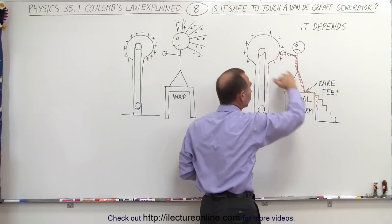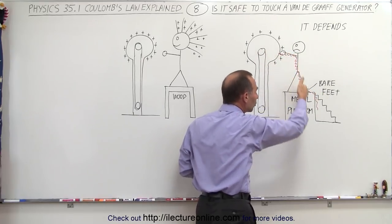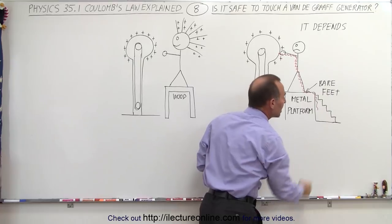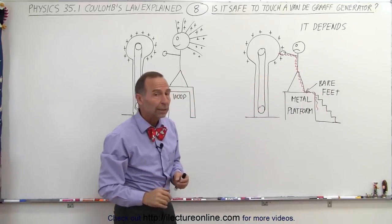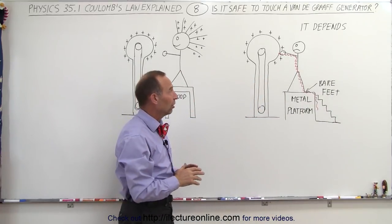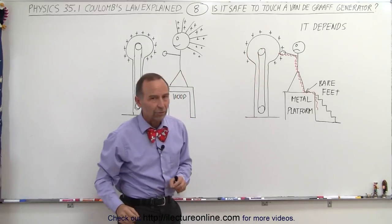Because now what can happen is, these charges will first leak onto you, but since there's a conducting path, the charges will just keep coming and will try to go through you to the metal platform down below. That would be dangerous, especially if there's a whole lot of charge buildup on the Van de Graaff generator.